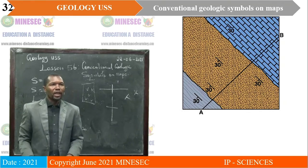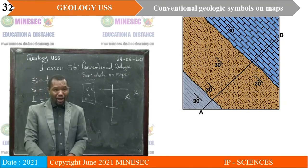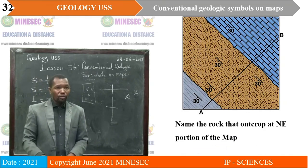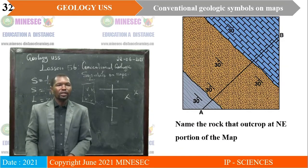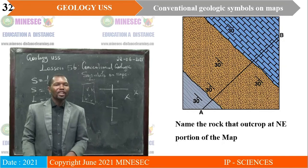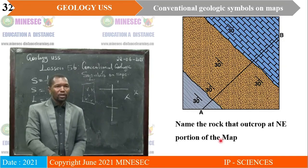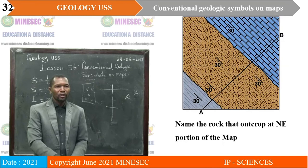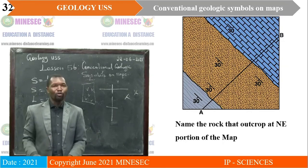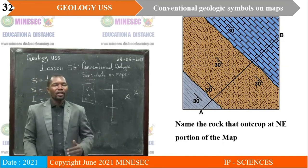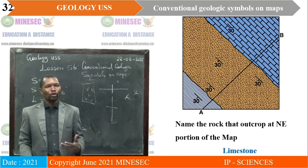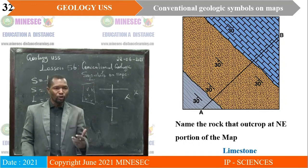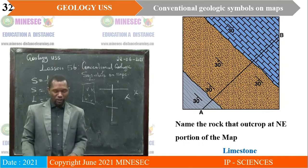On another map, we are asked to name the rock that outcrops at the northeast portion. Using the geologic symbol in that area, the rock type is limestone. That illustrates why geologic symbols must be used to identify different information on a map.